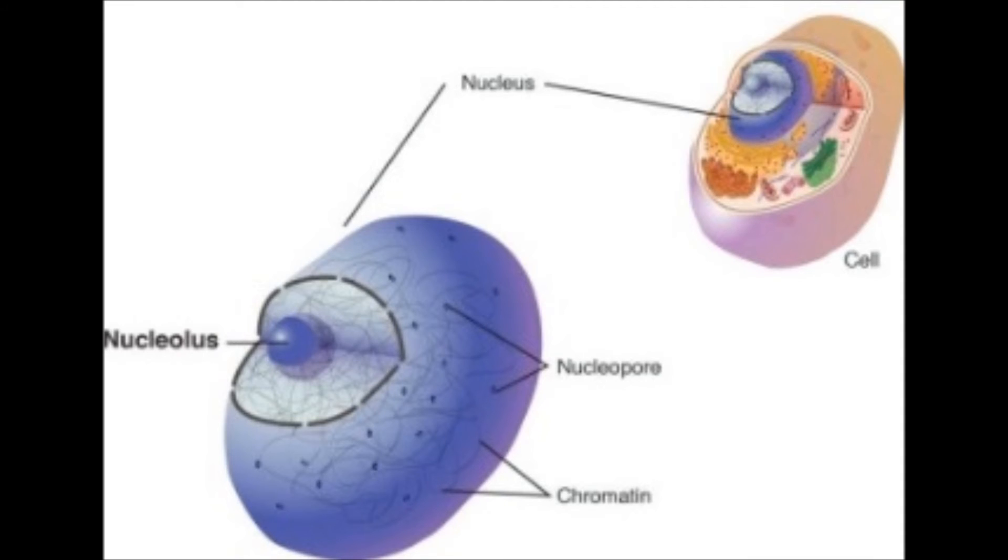Inside of the nucleus is where the nucleolus lies. Assembling ribosomes and the DNA, is what they do and try. Proteins and nucleic acid, in the shape of a ball. Even though they have a big job to do, this organelle is rather small.